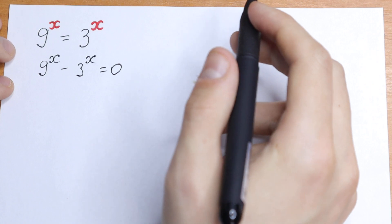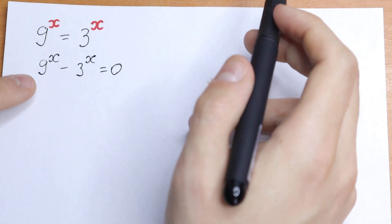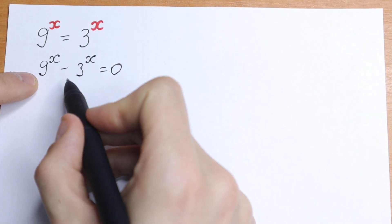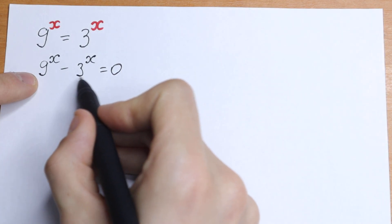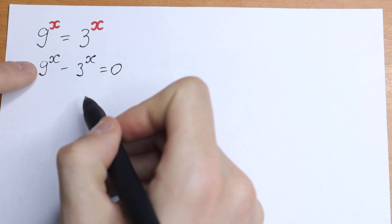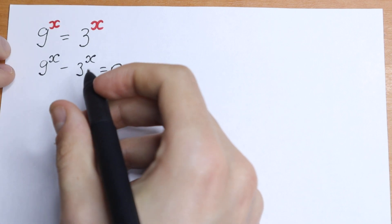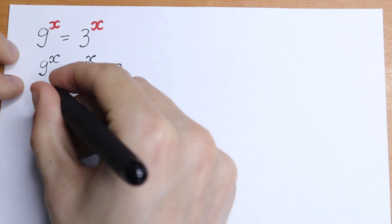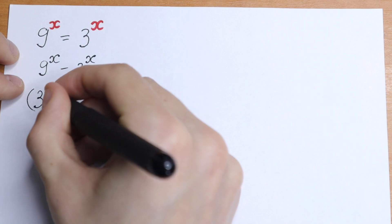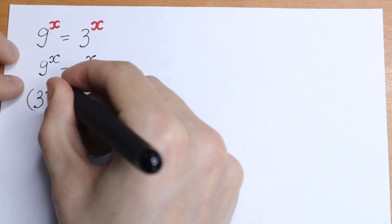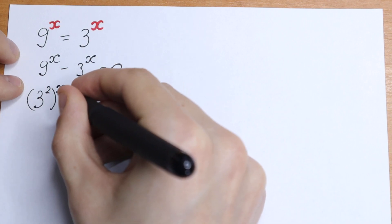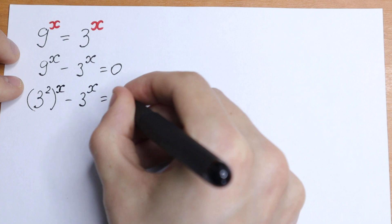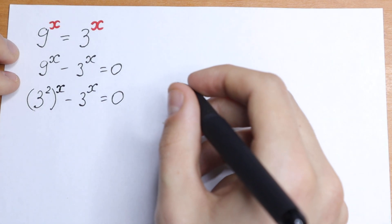So what are we going to do next? Take a look — we can write this 9 as 3 squared, and then we will have the same bases. So let's do this: let's write 9 as 3 squared. We'll have 3 squared to the power x, minus 3 to the power x, equal to 0.